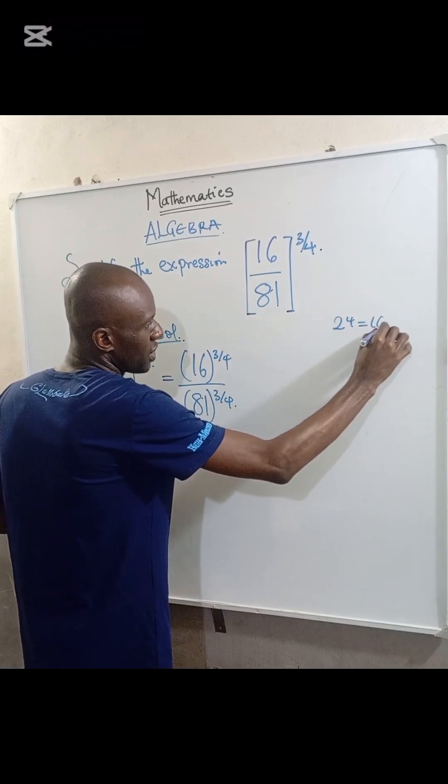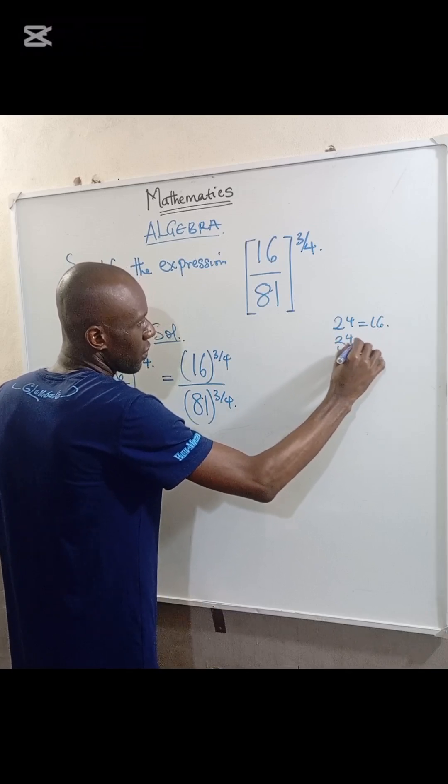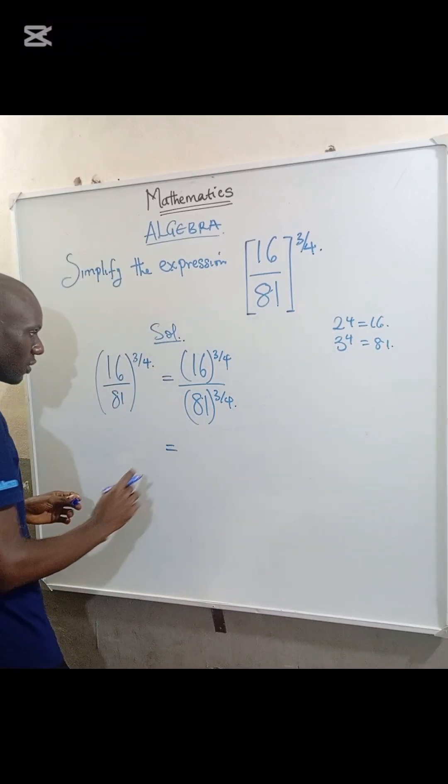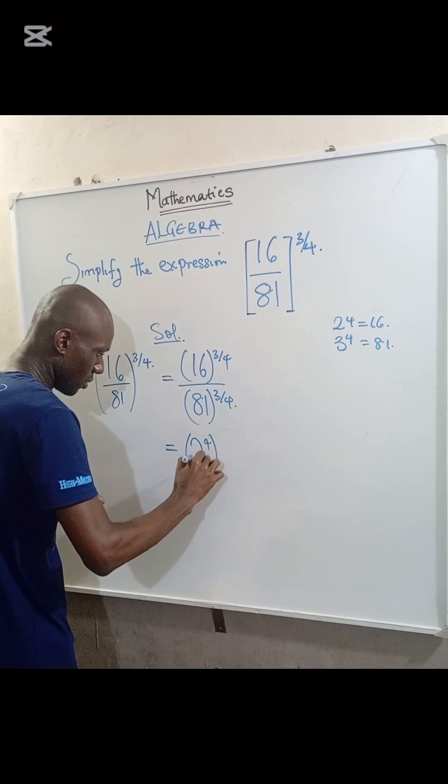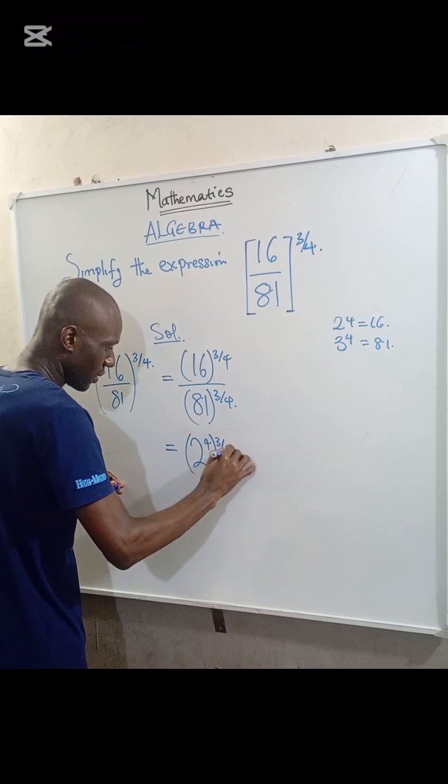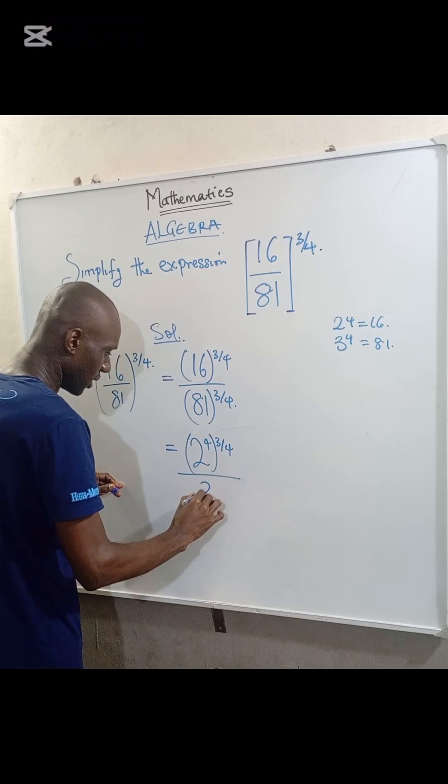Therefore this becomes 2 to the power of 4 to the power of 3/4, divided by 3 to the power of 4 to the power of 3/4.